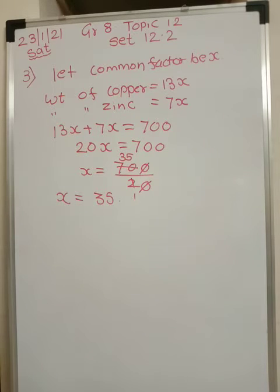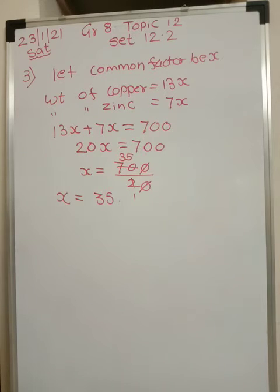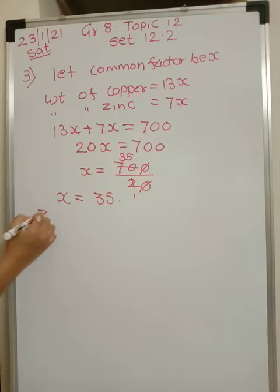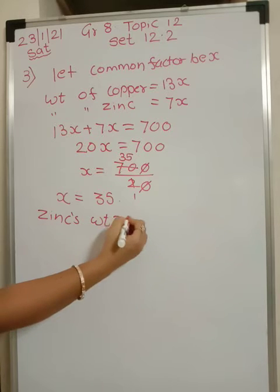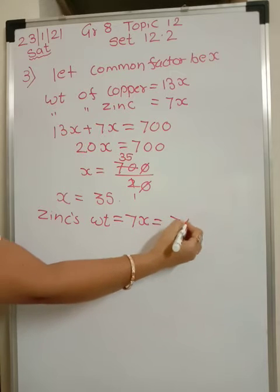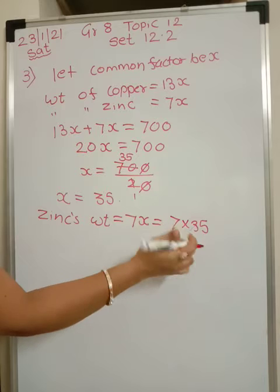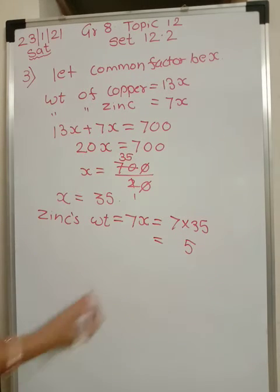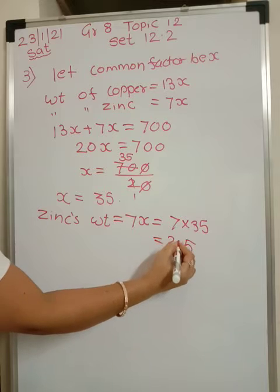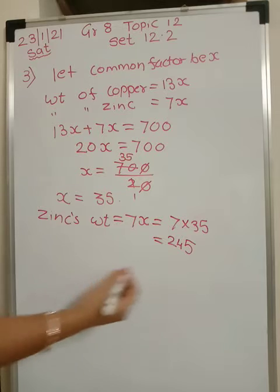We have to find the weight of zinc. Weight of zinc is 7 parts, so weight of zinc equals 7x, which is 7 into 35. That comes out to be 245 grams.